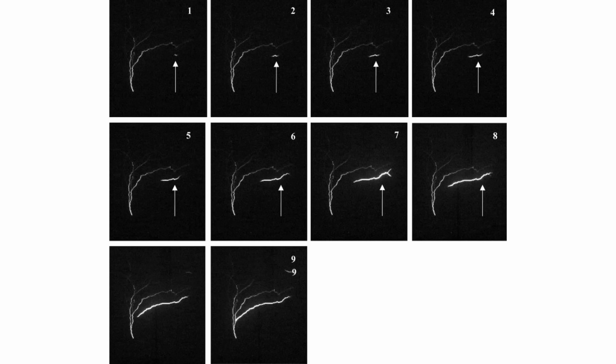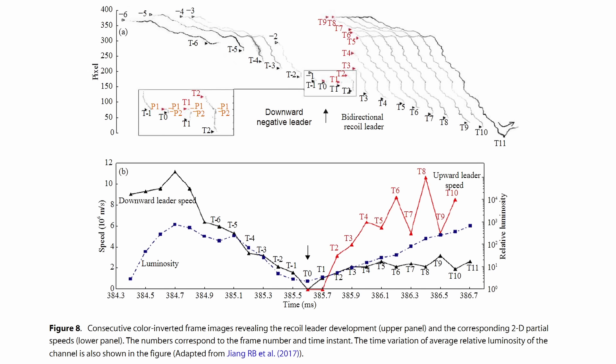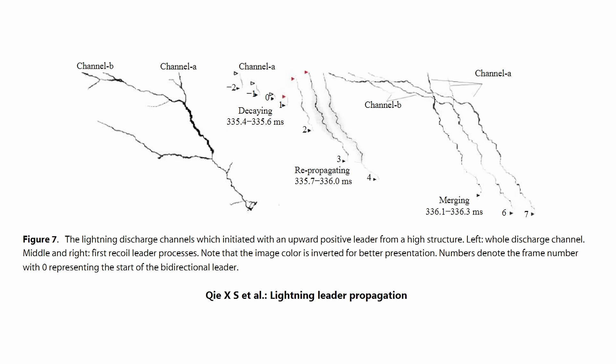Moving beyond the initial breakdown process, there's the recoil leader, which is a secondary electrical discharge which propagates along the lightning channel that has been established by previous streamers and leaders. Unlike the initial breakdown process, the recoil leader travels at speed significantly greater than the virgin breakdown. It extends rapidly through a previously ionized path, contributing to the continuation and intensification of lightning discharge.